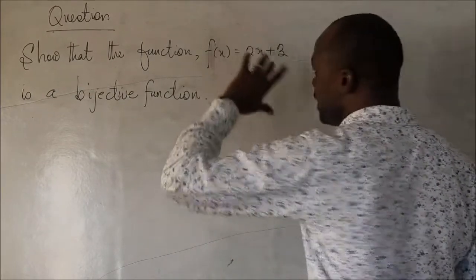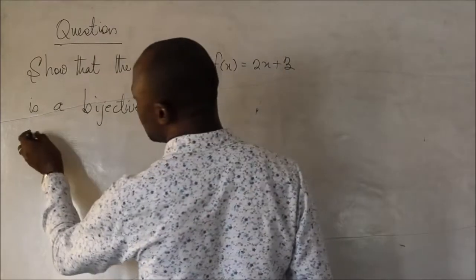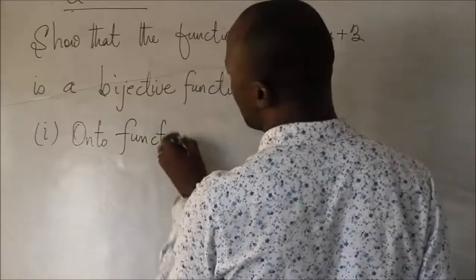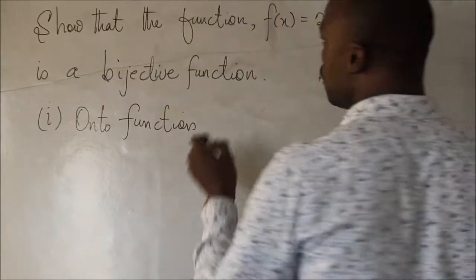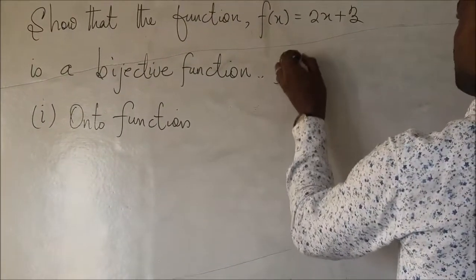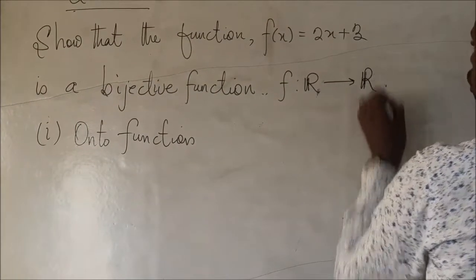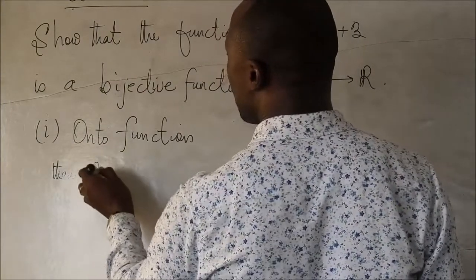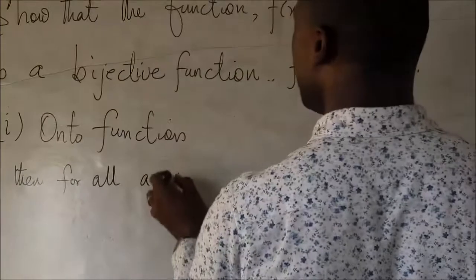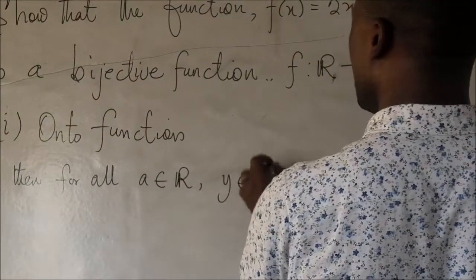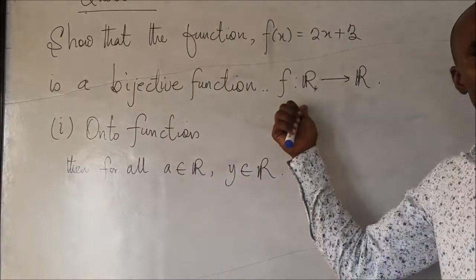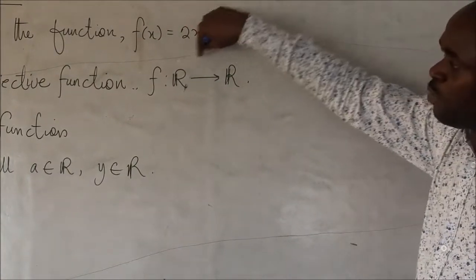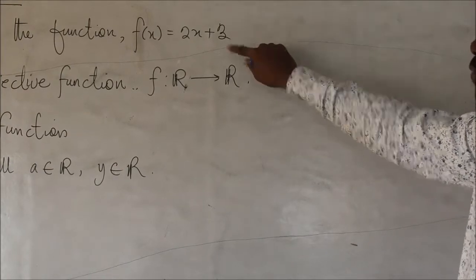So, how do we show that? We have to show that it is onto. We have to show that it's an onto function. And how do we show that it's an onto function? Remember, I told you that for a function, remember this function is a function that maps the real numbers to the sets of real numbers. So, if this function is to be onto, then for all a in R, there should be a y in R. What it means is that for any number you pick in the domain, there must be a corresponding number in the co-domain. For any value you pick on the co-domain, there must be a corresponding number in the co-domain. Then the function is onto.